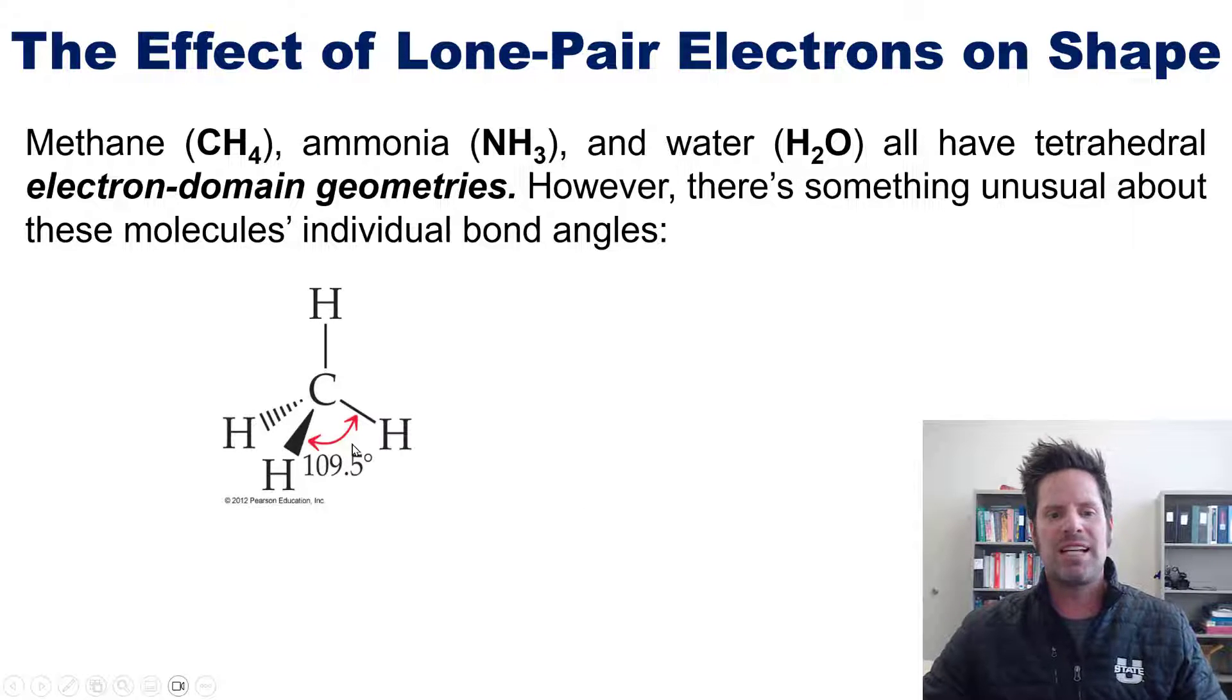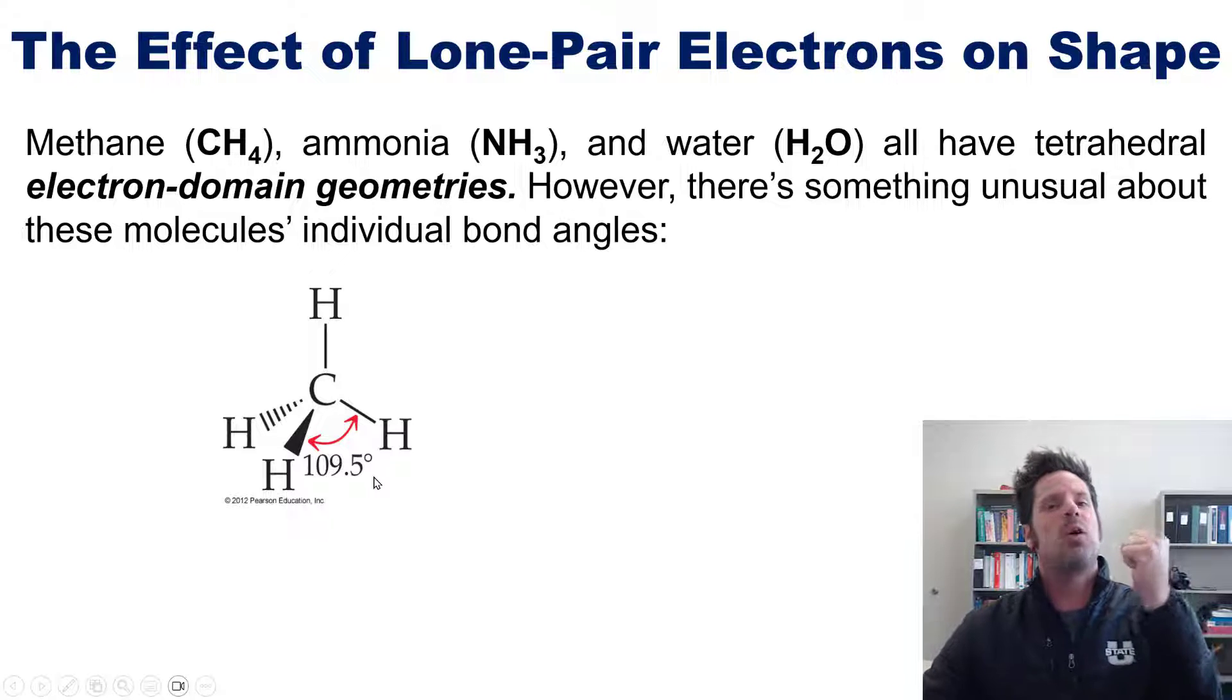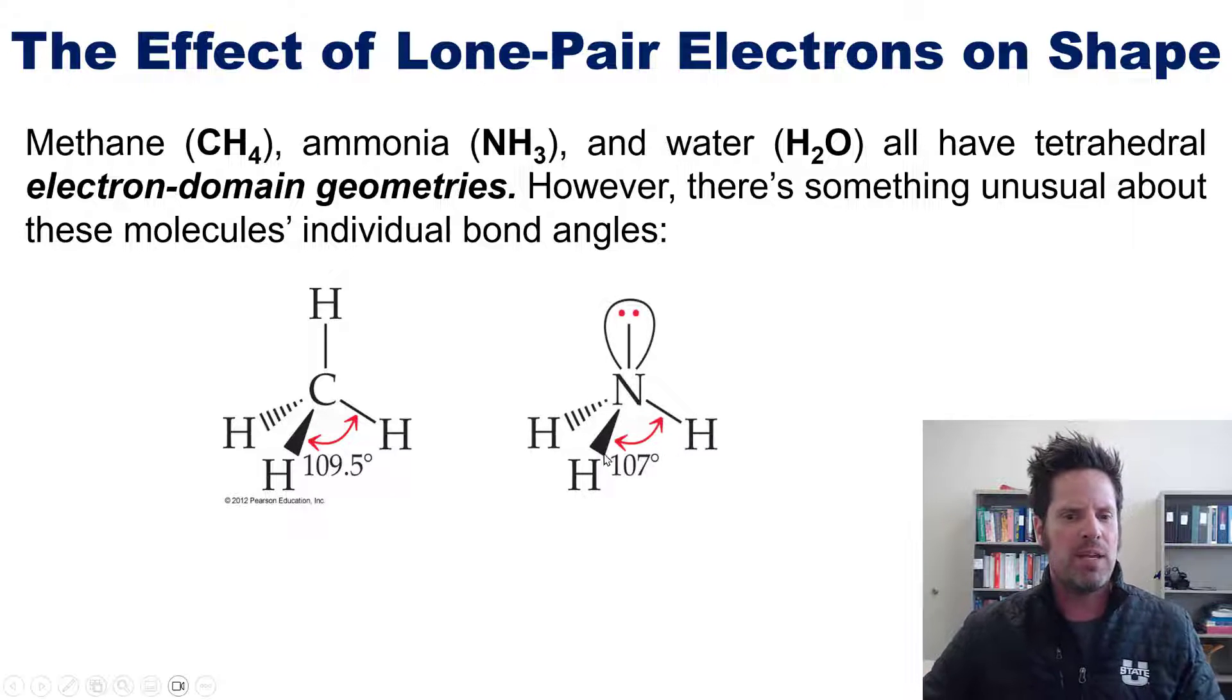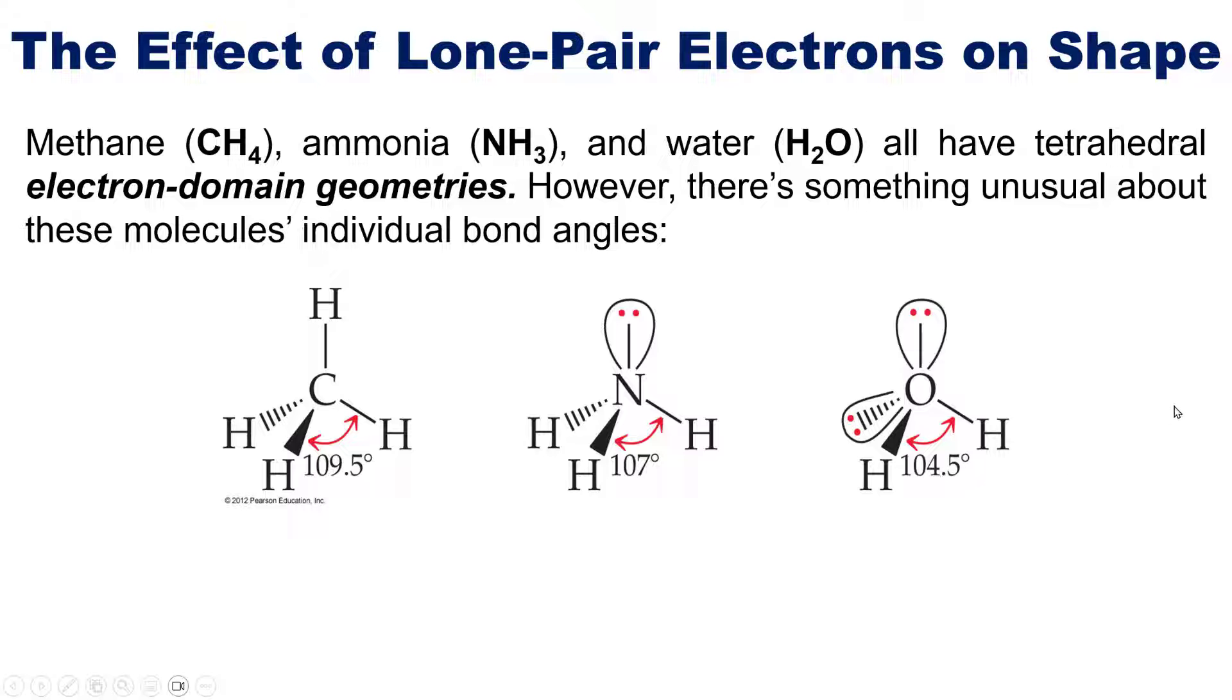If you look at methane, for example, its ideal bond angle tetrahedral right here is 109.5, whereas for ammonia it's about 107, and for H2O it's 104.5 degrees. So what in the world do you think is happening here?